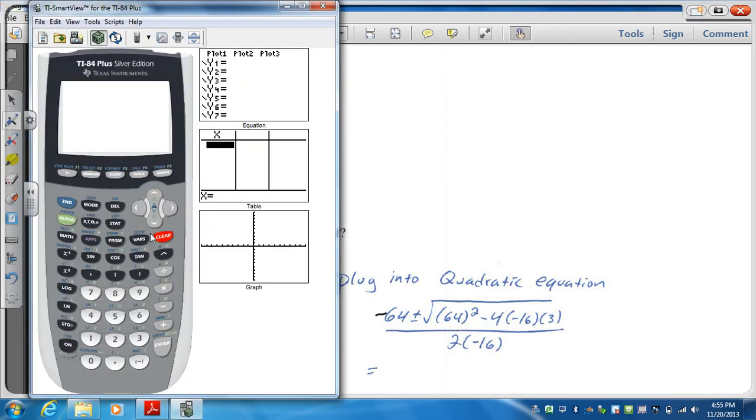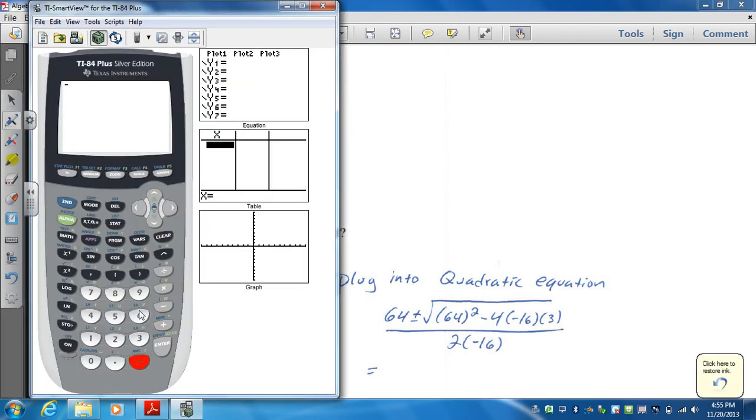And my calculator says negative 64. And I want to do, let's go minus the square root of 64 squared. And it's going to be minus 4 times negative 16 times 3.